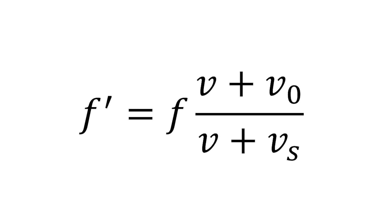The Doppler effect can be explained with the following formula, where f' is the observed frequency in hertz, f is the source frequency in hertz, v is the speed of sound in meters per second, vs is the velocity of the source in meters per second, and vo is the velocity of the observer.